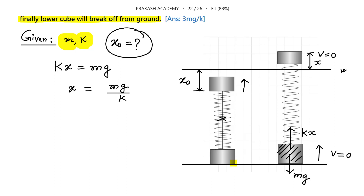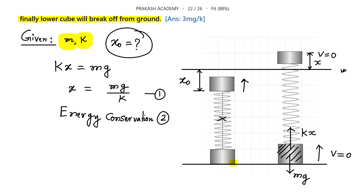Now we have one equation from the force condition. The second equation comes from energy conservation. Pause the video, write the energy conservation equation, use equation 1, and solve for x naught.